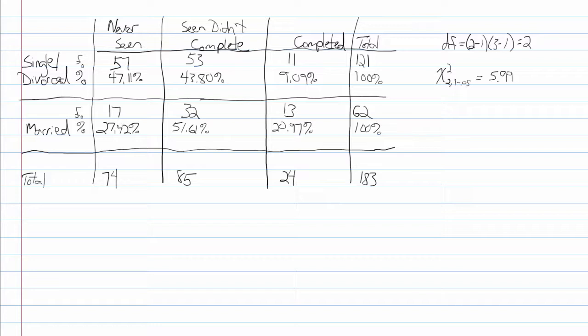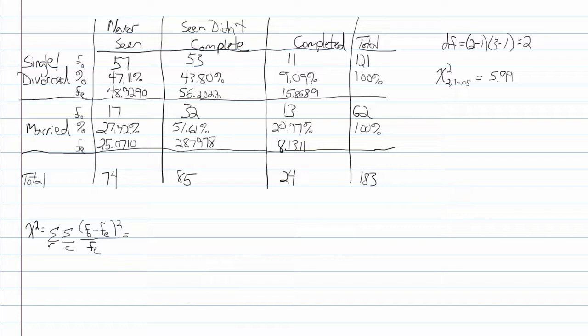The first step in conducting the Chi-Square Test of Independence is to compute expected cell frequencies. Expected cell frequencies are obtained by multiplying the row margin by the column margin and dividing by the total sample size. For example, the expected cell frequency of 48.929 is obtained by multiplying 121 by 74 and dividing by 183.